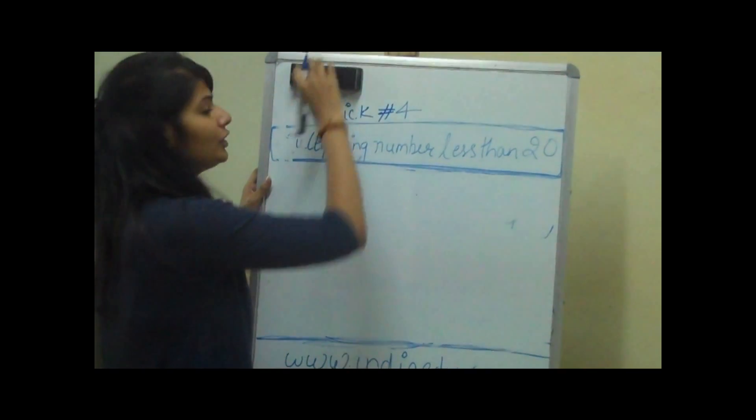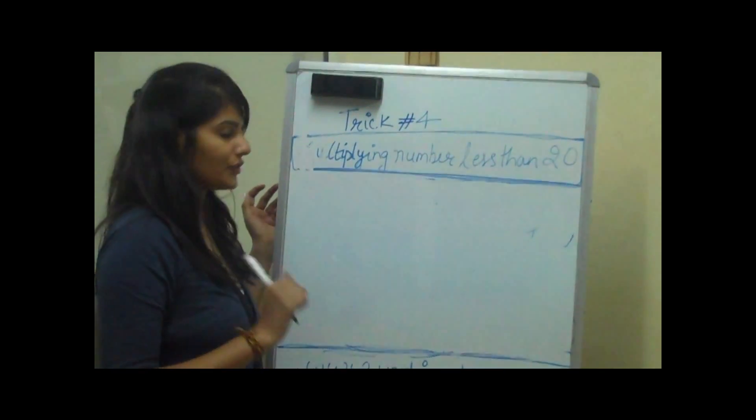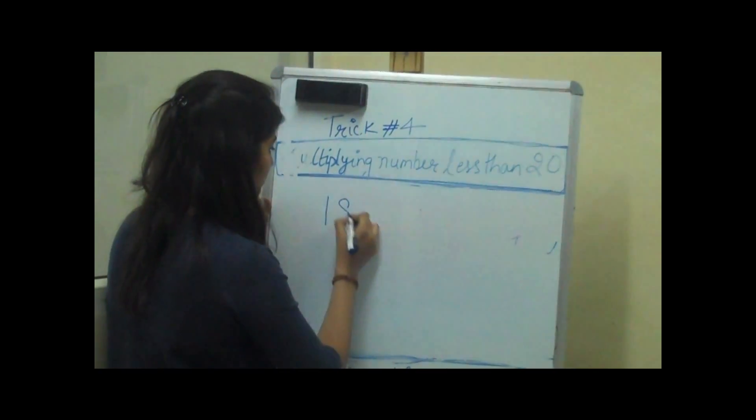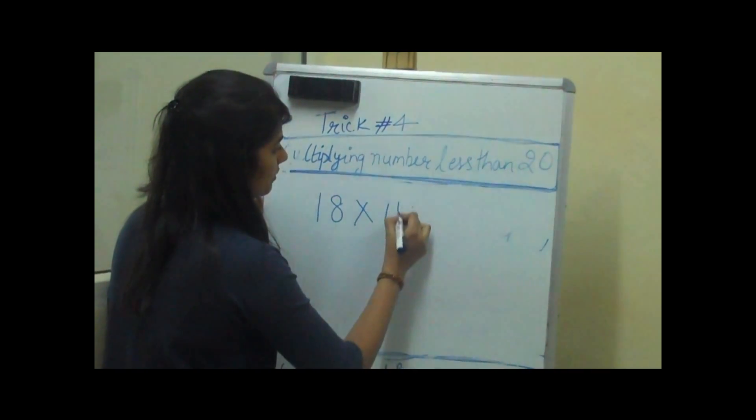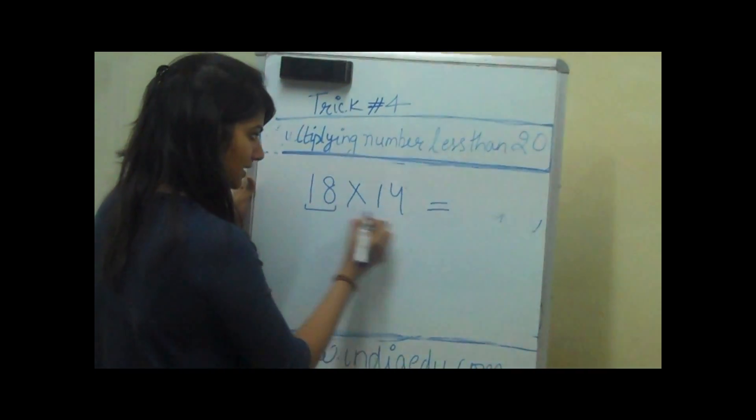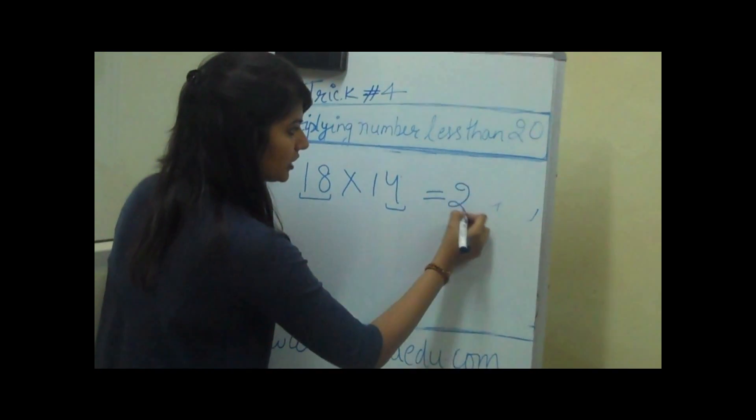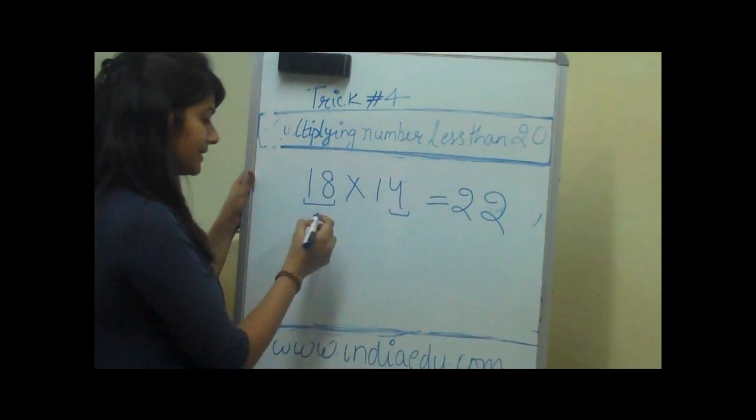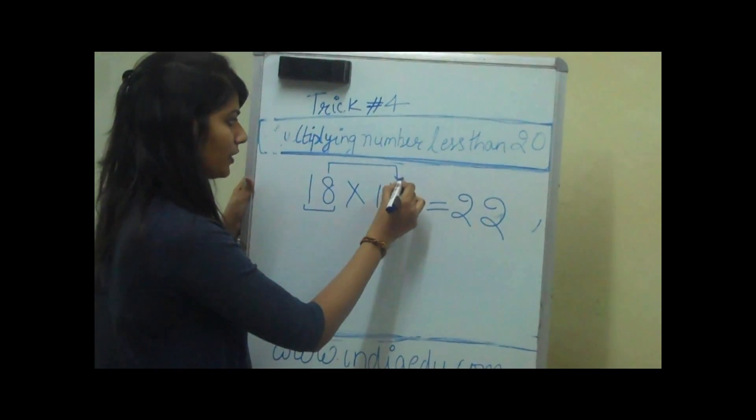Let's take another example in which we have a trap. If we have to multiply 18 with 14, we will add 18 to 4 which is 22. But since 8 into 4 is 32,